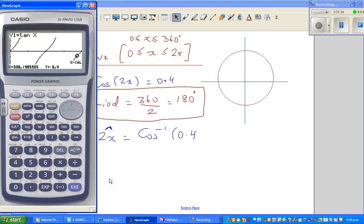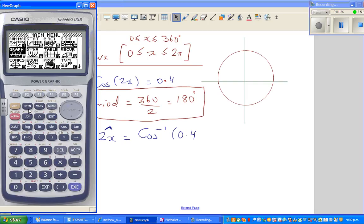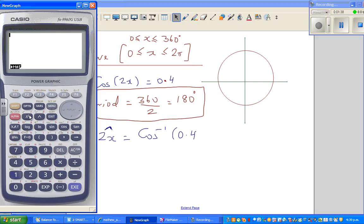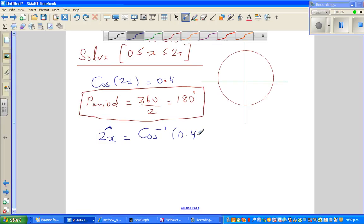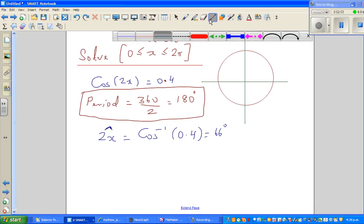So this is my calculator. First, go to run, and always check your setting. It's in degrees, so that's fine. I'll go shift cos of 0.4. That is 66. I'm only writing a whole number, so this is 66 degrees, the reference angle.